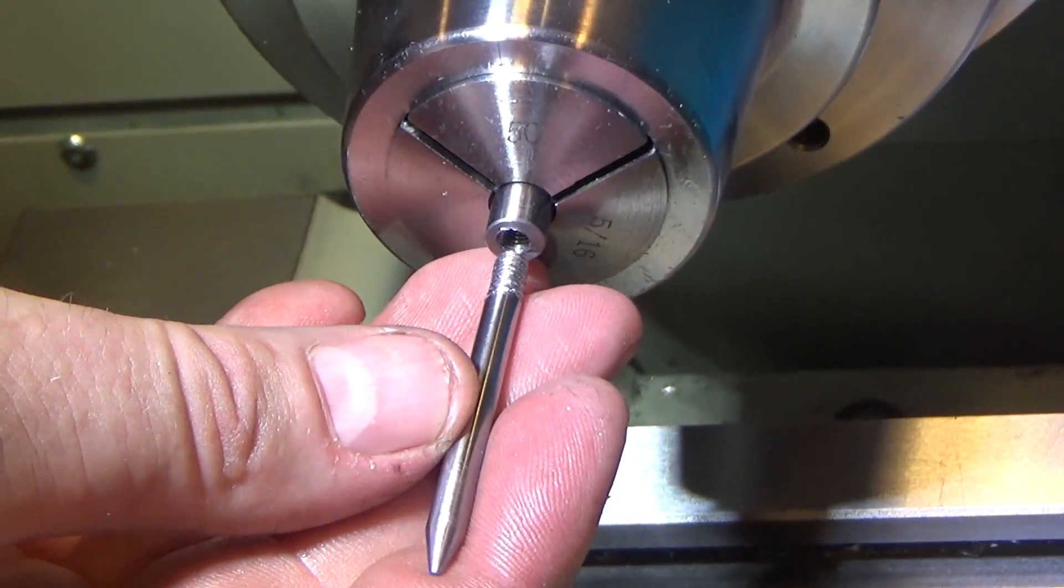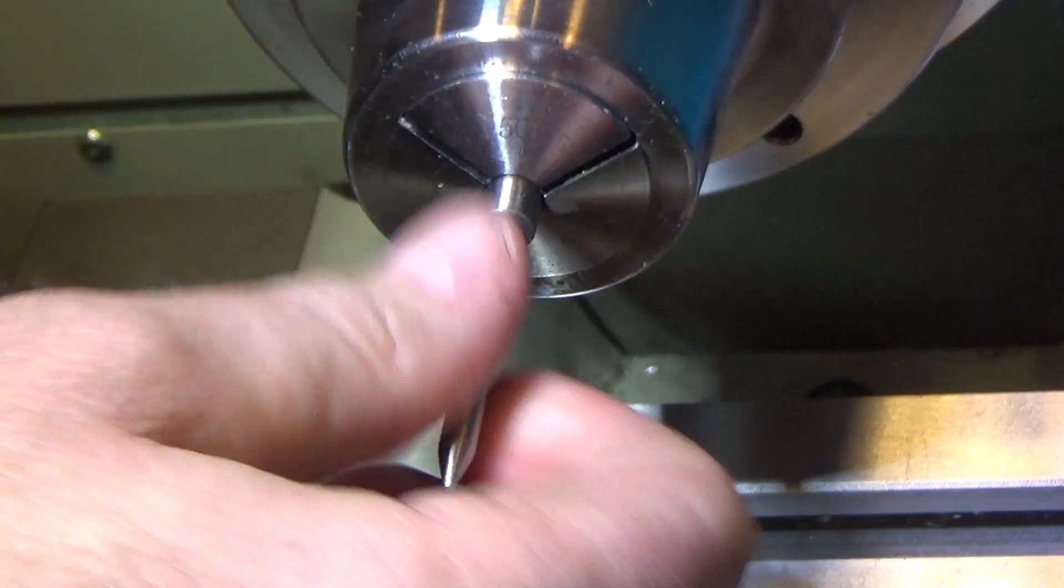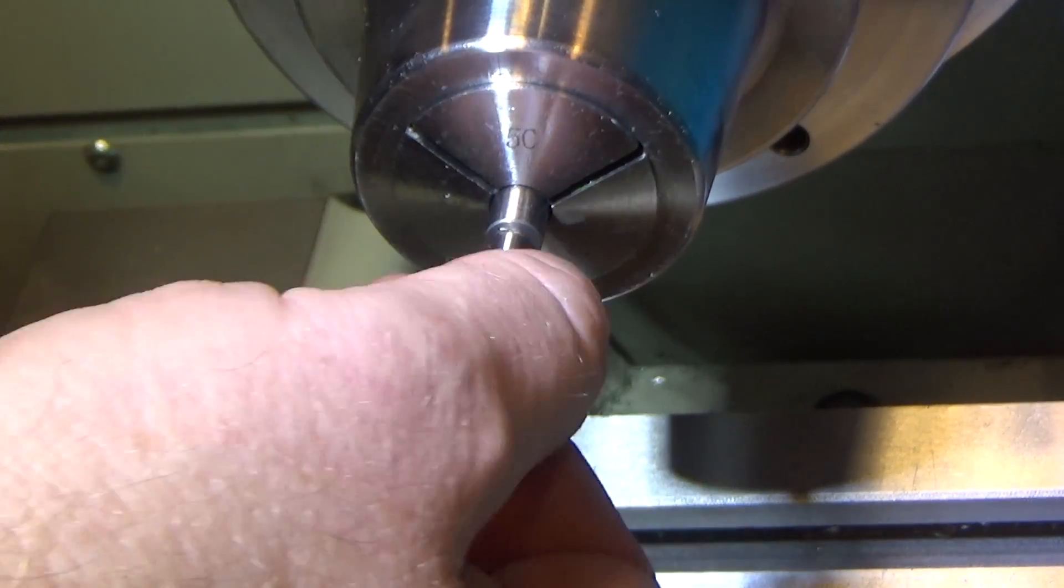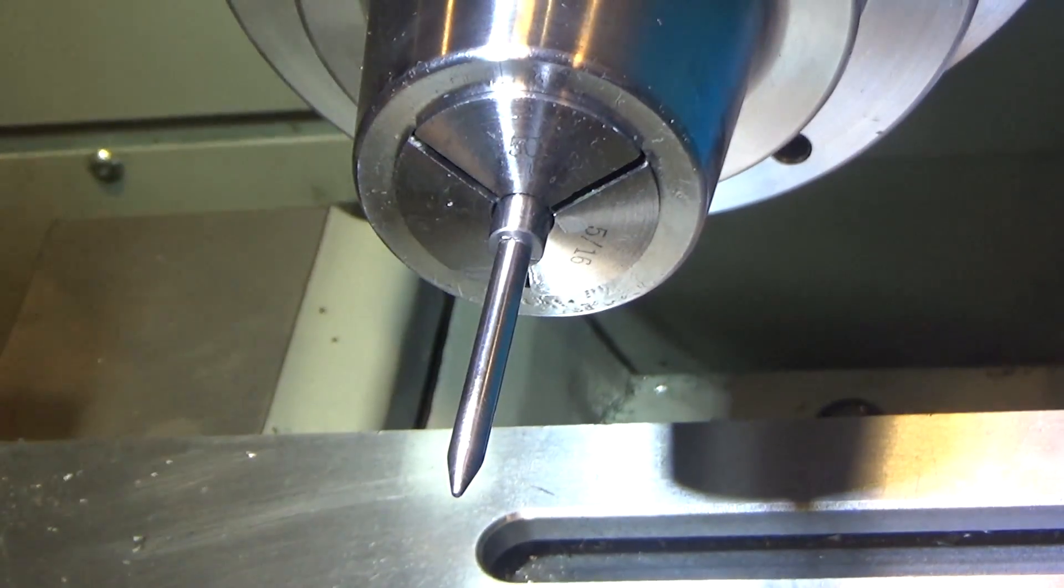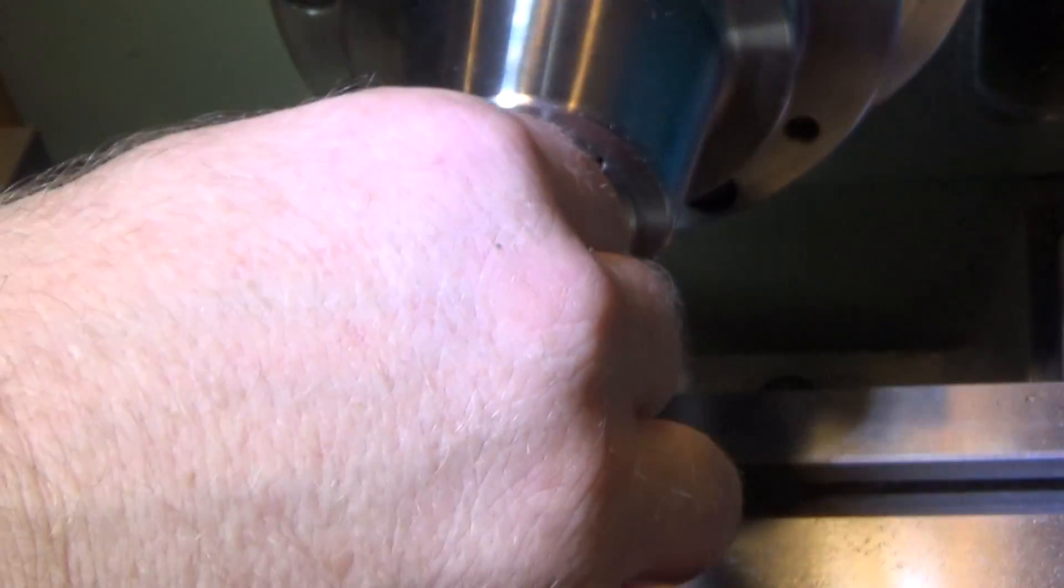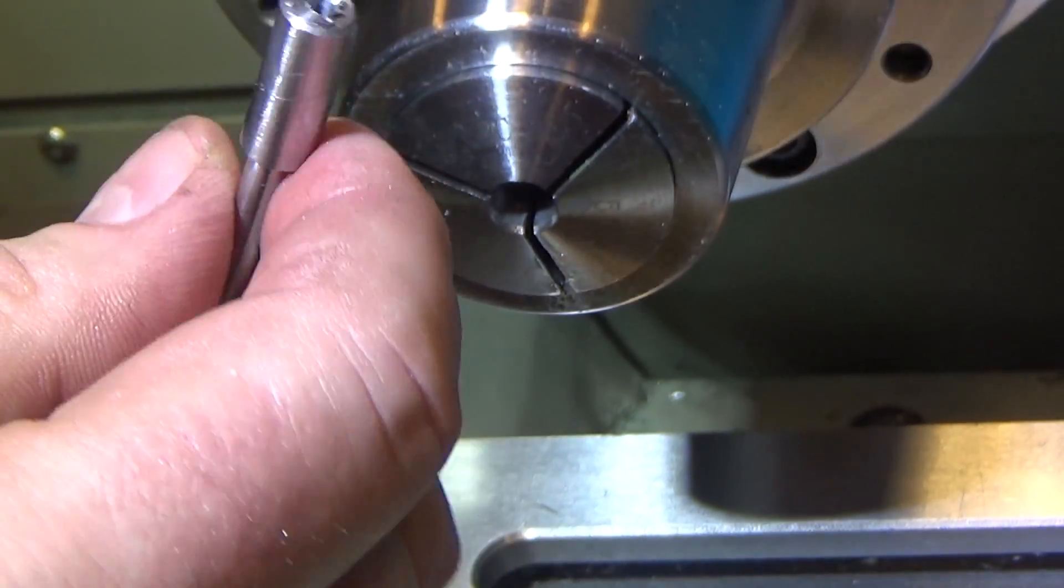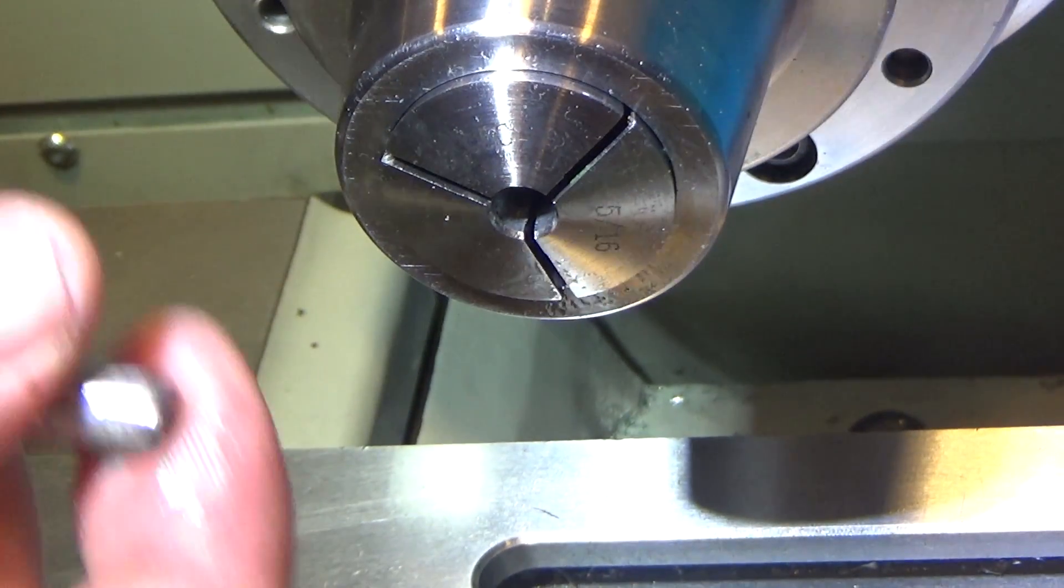Alright, so here's just to show you where the part goes. The tip screws into the follower that runs inside and that leaves us with this. So let's do the main part of the main body of the unit.